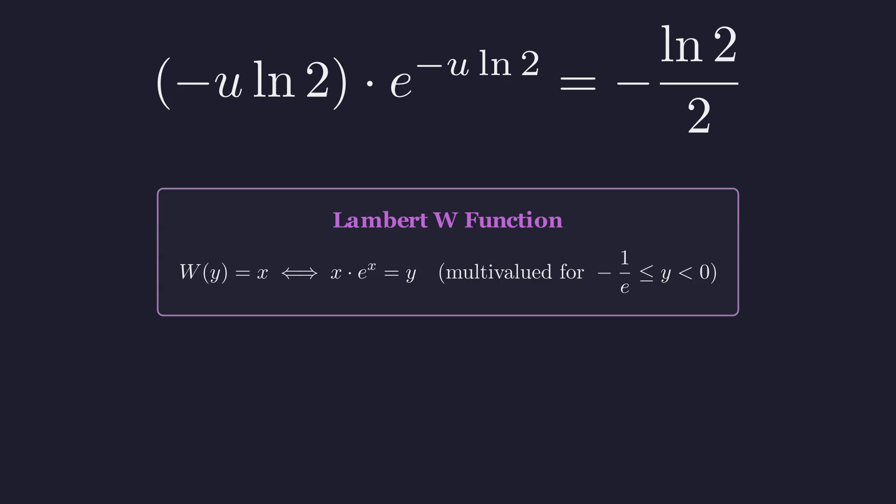For negative arguments between negative 1 over e and 0, the function has two real branches: W_0, the principal branch, and W_(-1), the secondary branch. Each branch gives us a distinct solution.